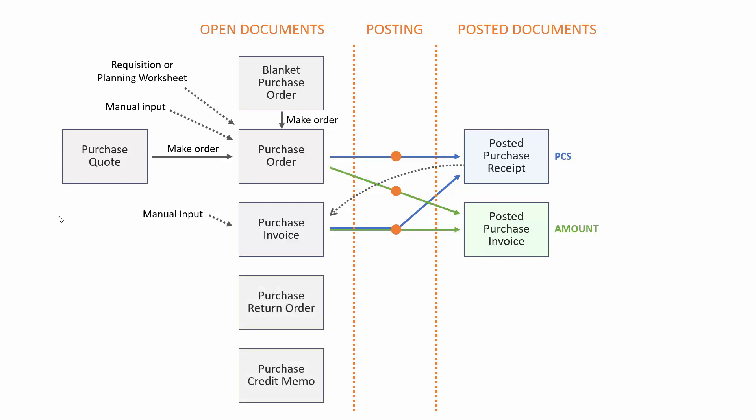A purchase return order and a purchase credit memo have the same structure and the same differences as a purchase order and a purchase invoice. The purchase return order is a document where you can post the shipment — because we're shipping it out of stock back to the vendor — separately, and you can post the invoicing separately, whereas the credit memo is made in one go. As you can see here, they can be fetched from a posted document, posted receipt, or posted invoice, both the return order and credit memo. Normally when you want to return something, you point to the document you have posted that you want to reverse, and that creates the open document, but it can also be entered manually.